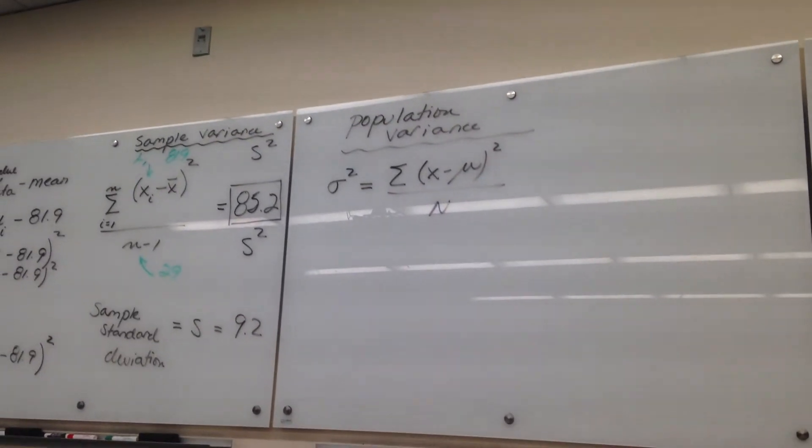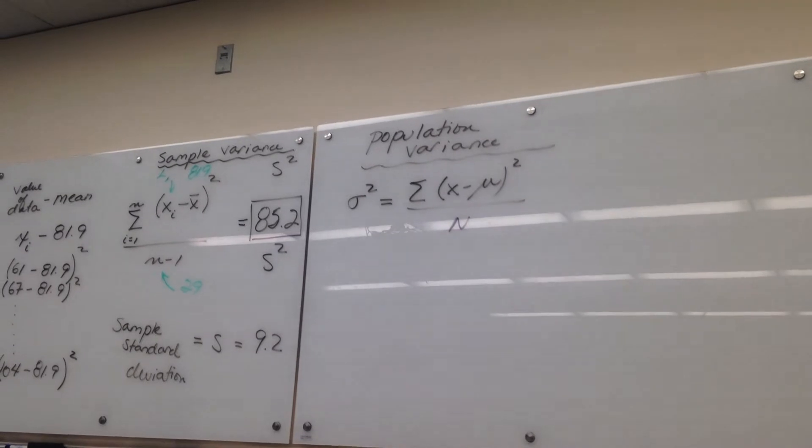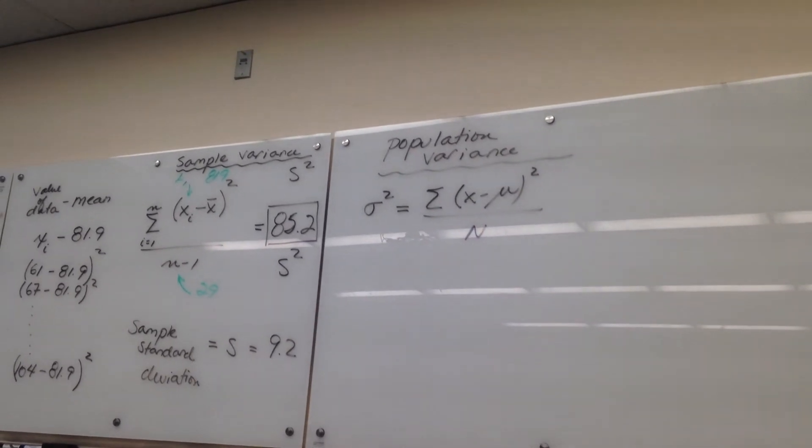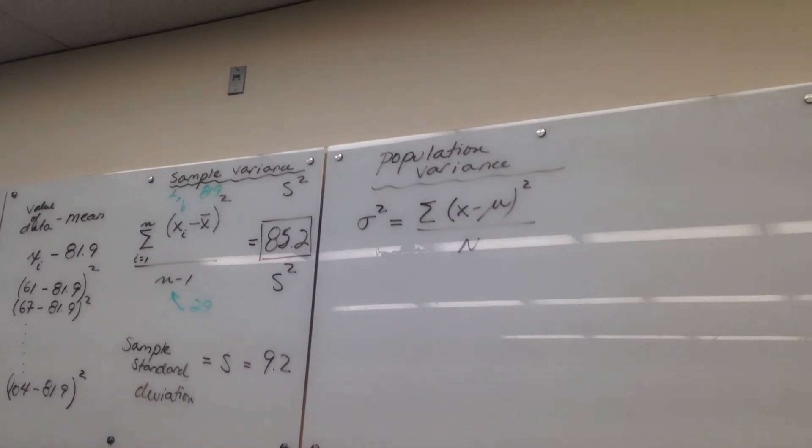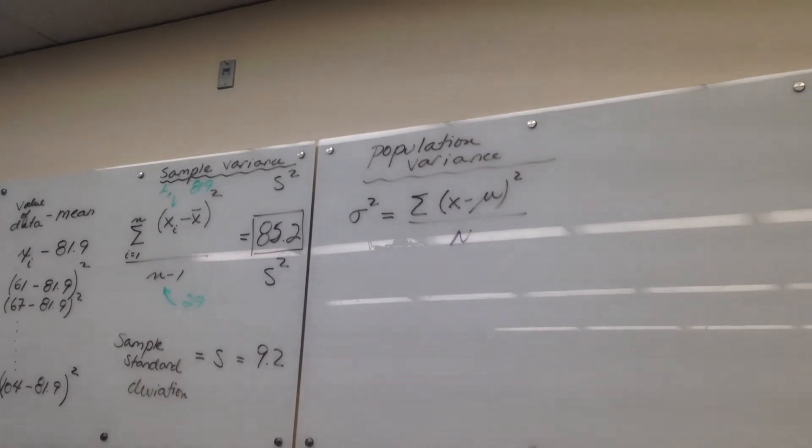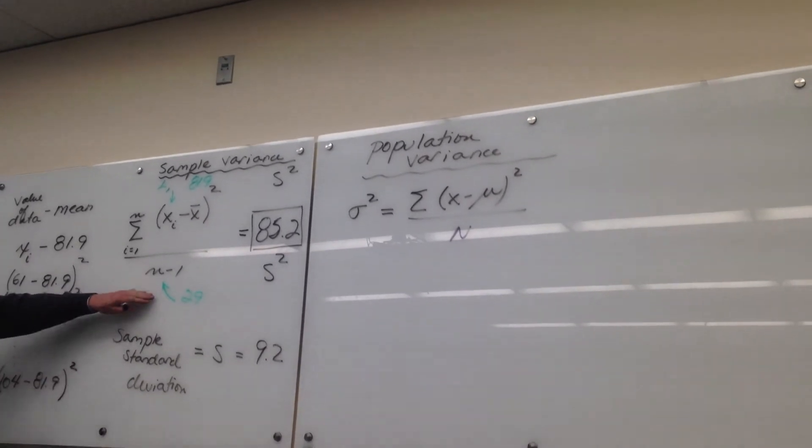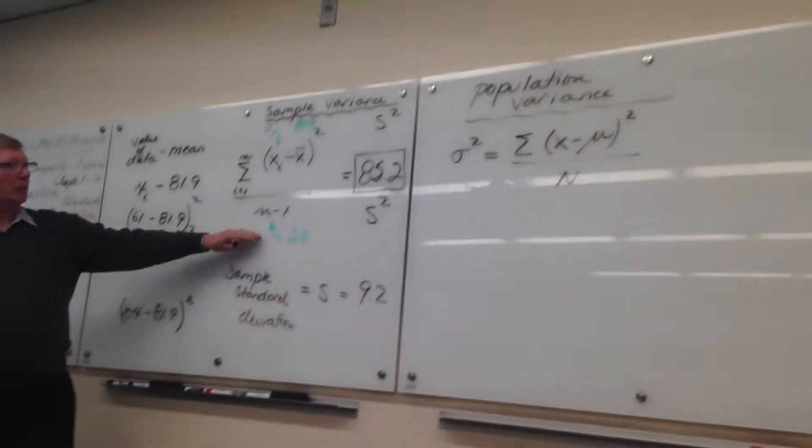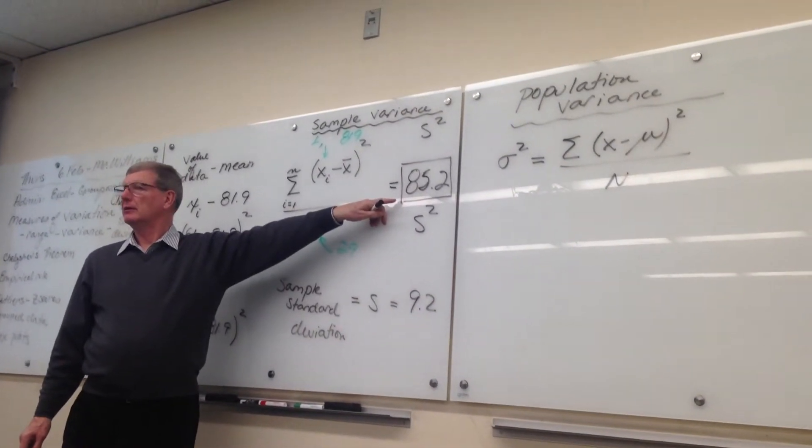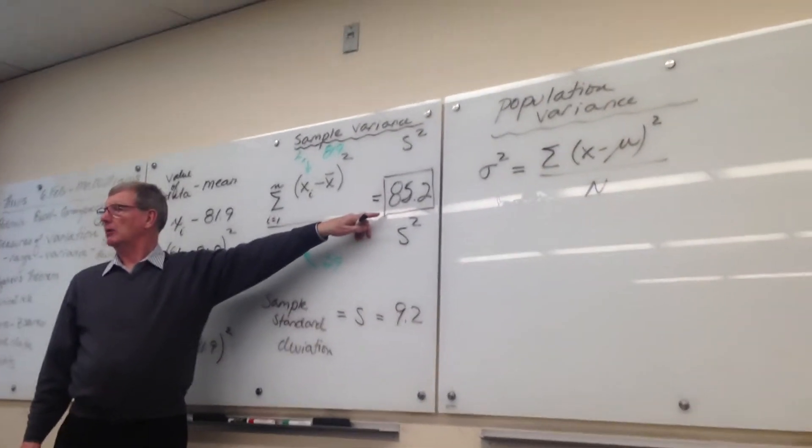Statisticians are like finicky, I guess. I guess they're conservative. If I divide by 30 here, will I get a bigger or a smaller number over here? Smaller, right?